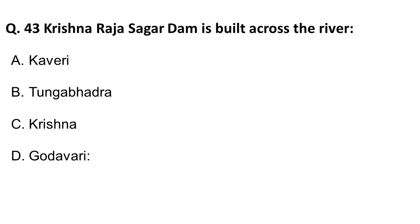Next question: Krishnarajasagar Dam is built across which river? This is a factual question — it is built across the Kaveri River.